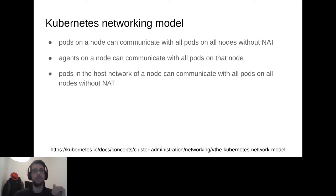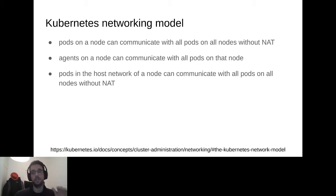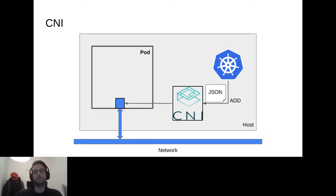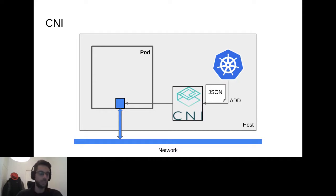The Kubernetes networking model states that all pods can communicate with all pods across different nodes, even if using the host network. An agent on a node can communicate with all pods on the nodes it manages. To implement this model, Kubernetes uses CNI — Container Network Interface — a CNCF project and plugin-based networking solution. CNI is also container orchestration engine agnostic, so as far as CNI is concerned, Kubernetes is just another runtime.